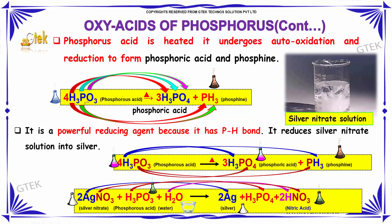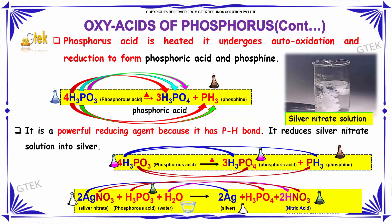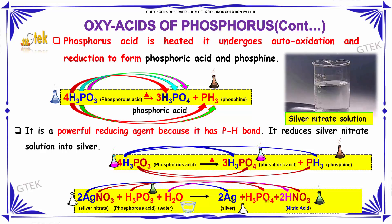Phosphorous Acid on heating gives Phosphoric Acid and Phosphine. Silver nitrate reacts with Phosphorous Acid and water to produce silver, Phosphoric Acid, and Nitric Acid.